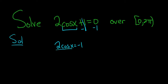Then we'll divide by 2, divide by 2. So we get cosine x equals negative 1 half.